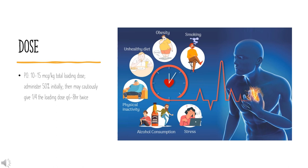Maintenance dosing: P.O. 3.4 to 5.1 mcg/kg/day, or 0.125 to 0.5 mg/day P.O. Dose may be increased every 2 weeks based on clinical risks, serum drug levels, and toxicity.